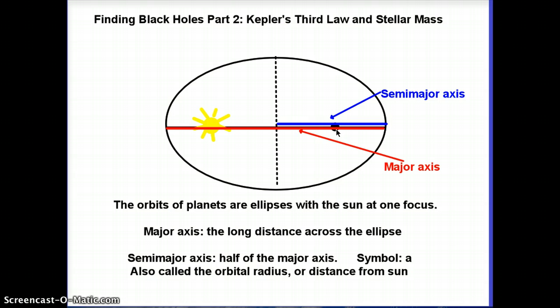Something you're going to need to know about when we're talking about ellipses is that this long distance across an ellipse is called the major axis, and half of that is called the semi-major axis.